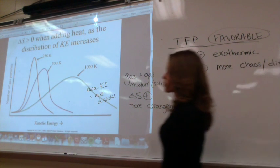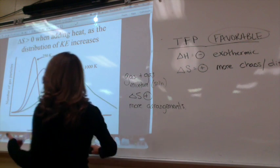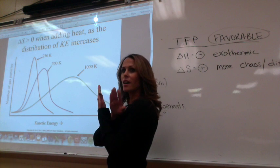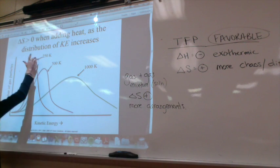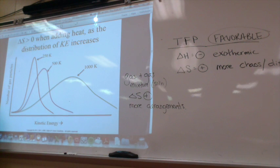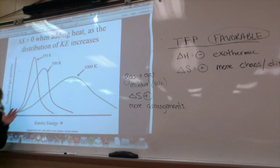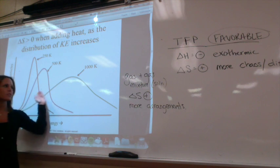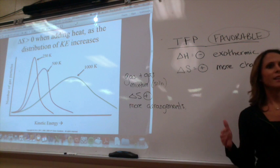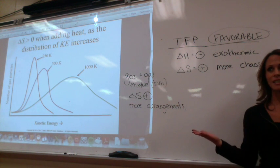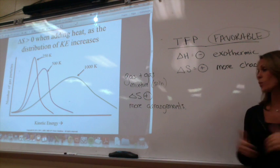The Boltzmann distribution curve shows that not all particles are doing the same thing — they have a distribution of energies. As temperature increases, kinetic energy increases, and entropy values increase. You get a higher positive delta S because kinetic energy is increasing. Think of it like dancing in a room — if everyone starts dancing more energetically, there's a lot more disorder.